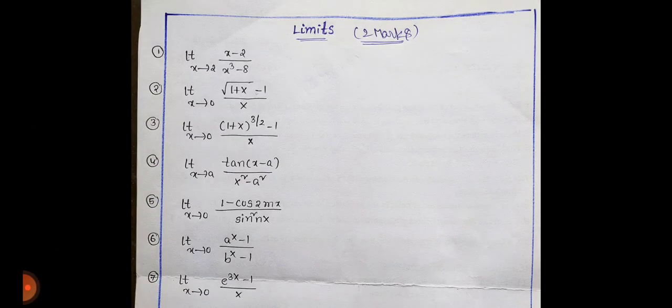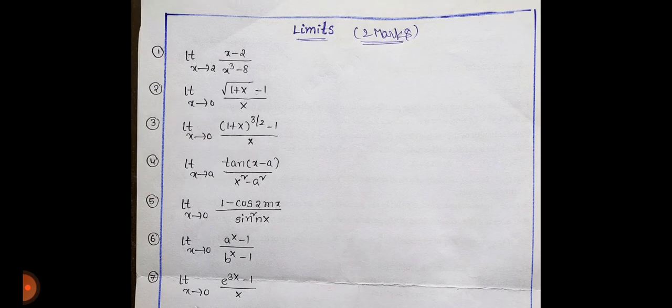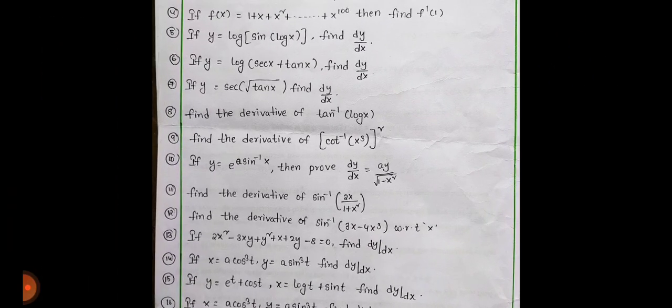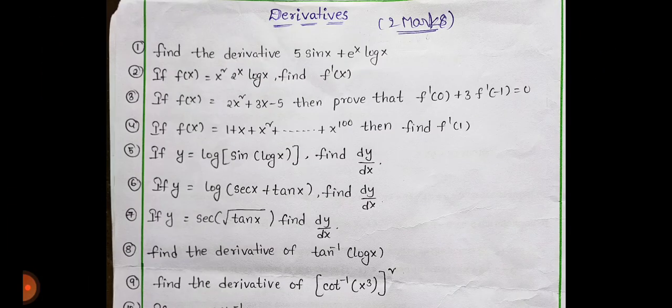Next limit change. Limit - x tends to 2, x minus 2. Rationalization, formula based. Formula, formula. Direct method - it is formula. 10 not change. Limits 10 - easiest problem. Next, differentiation - let's do the formula. 1, 2, 3, 4, 5, 13, 16, 17.